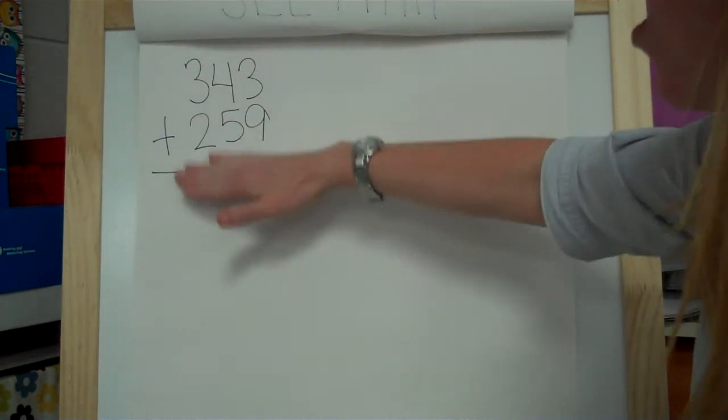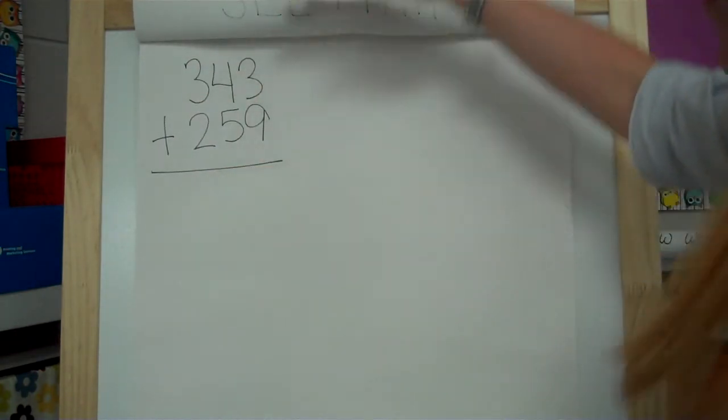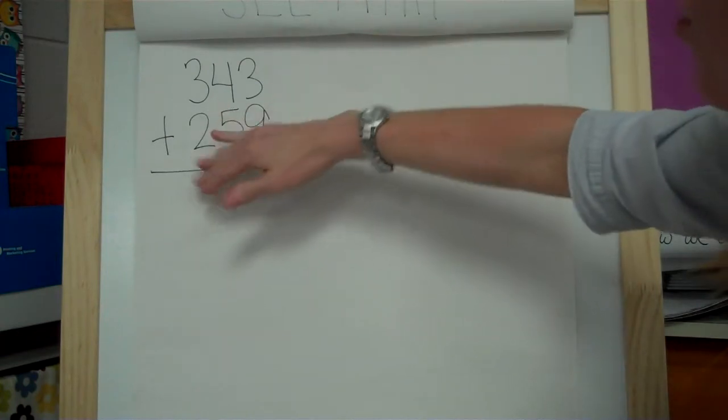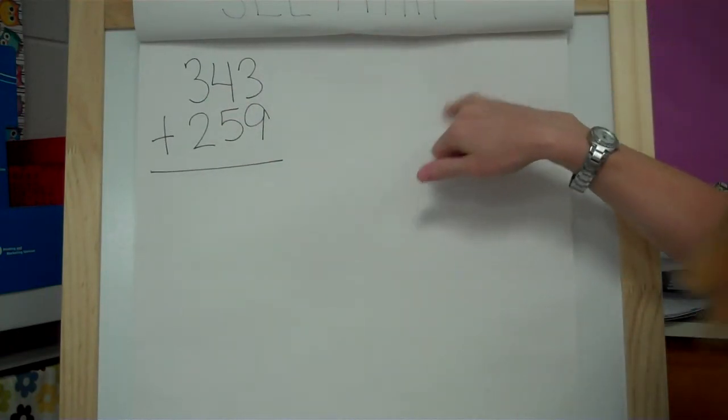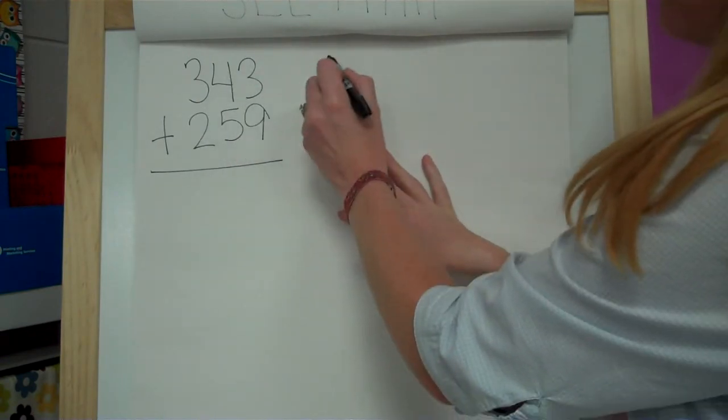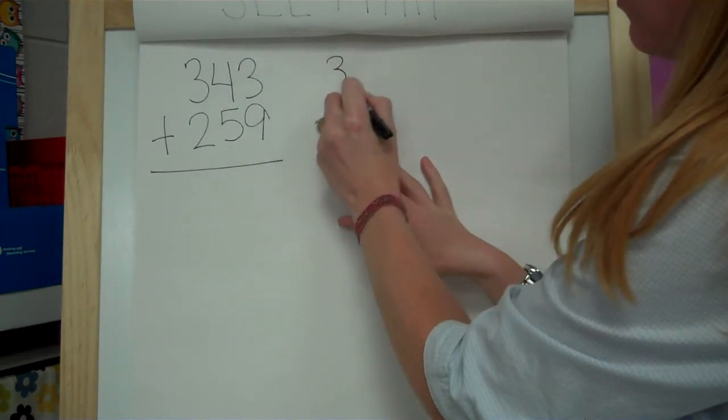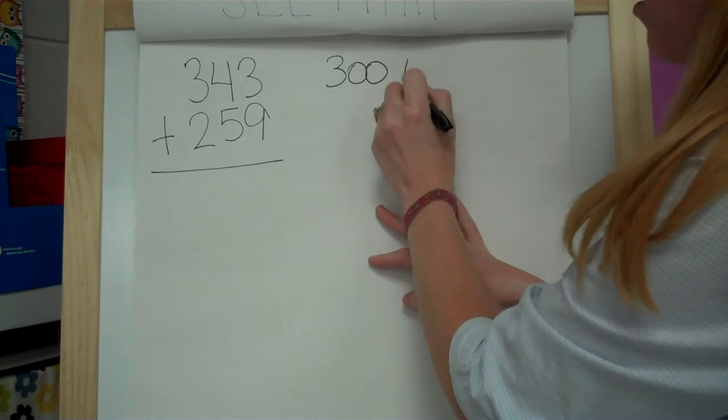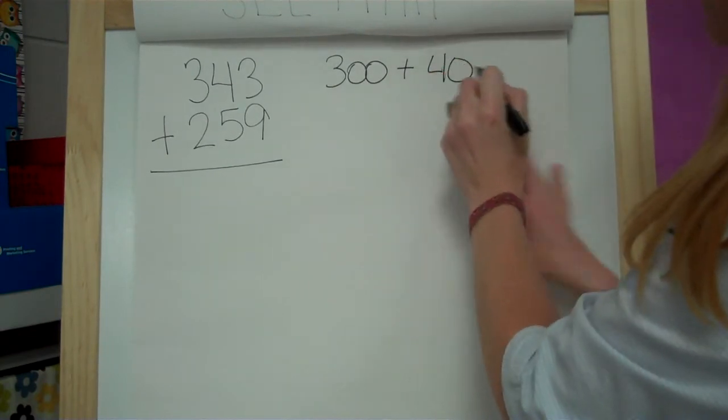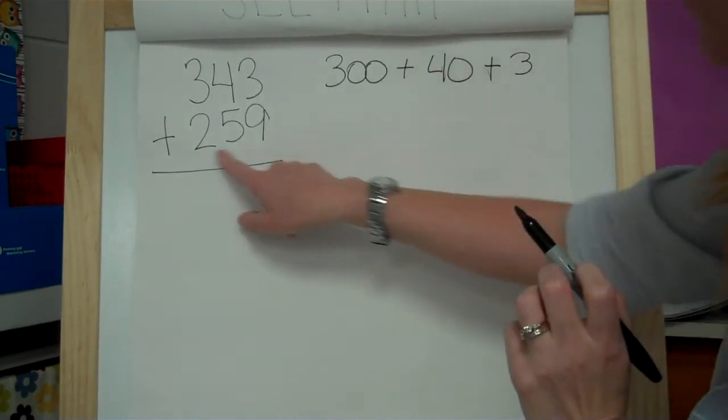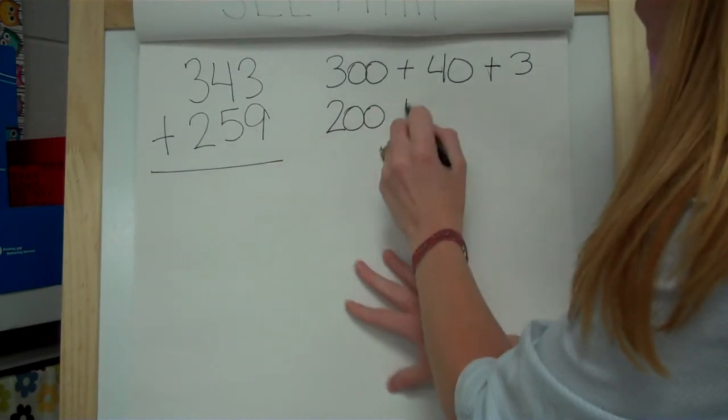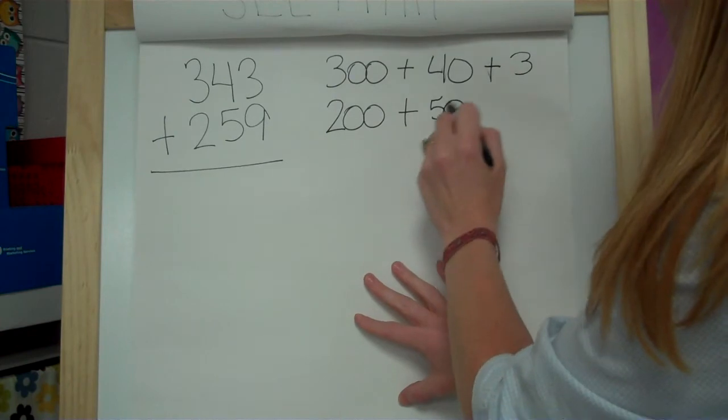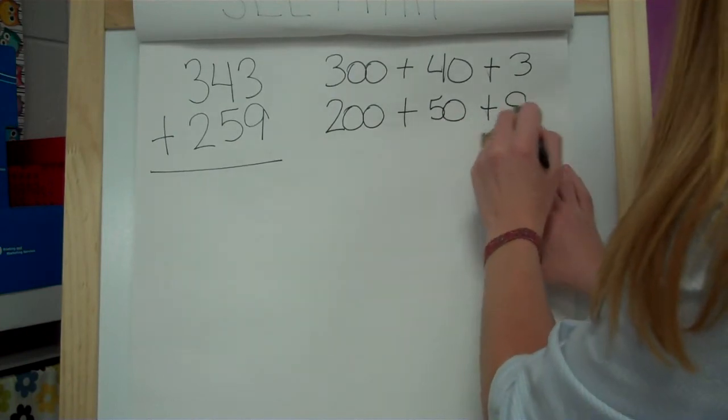Alright, so we're going to break this apart. Now this problem is written vertically instead of horizontally like the other one was. So we're going to write the place value expanded form out beside it. Alright, so the 343, it's going to be 300 plus 40 plus 3. And then the 259, I'm going to break it down to be 200 plus 50 plus 9.